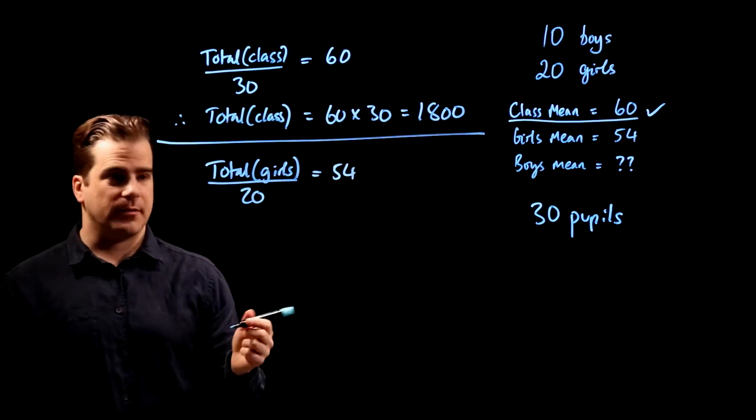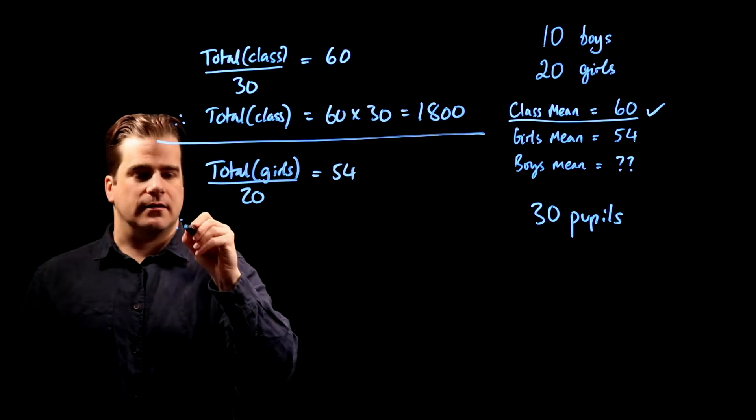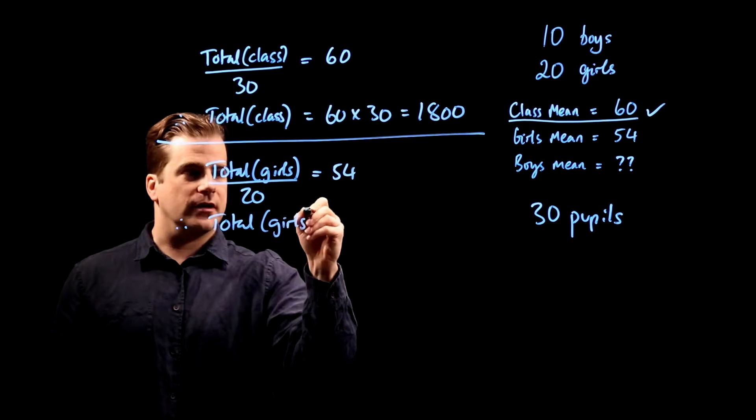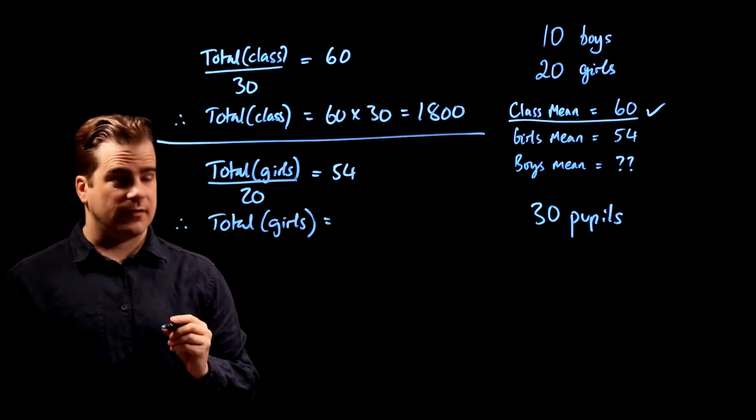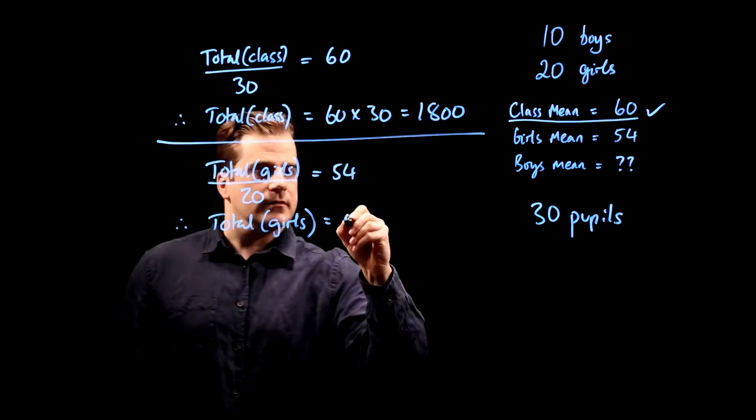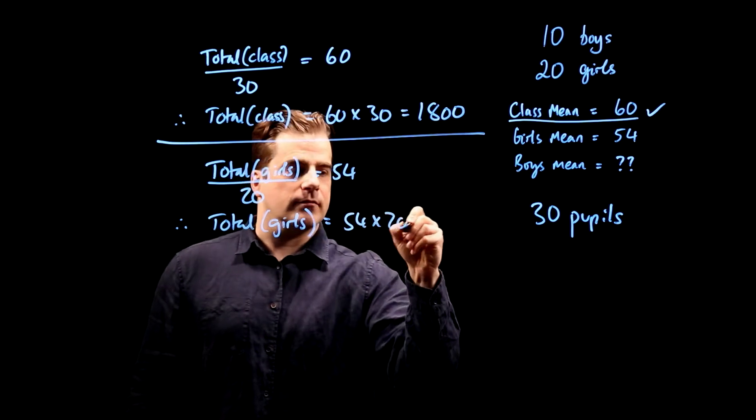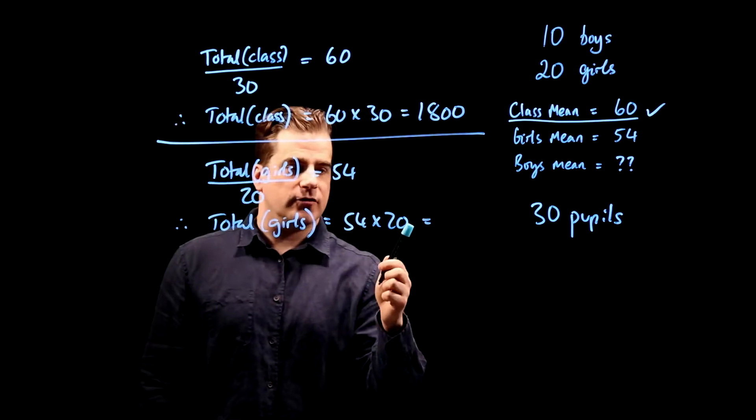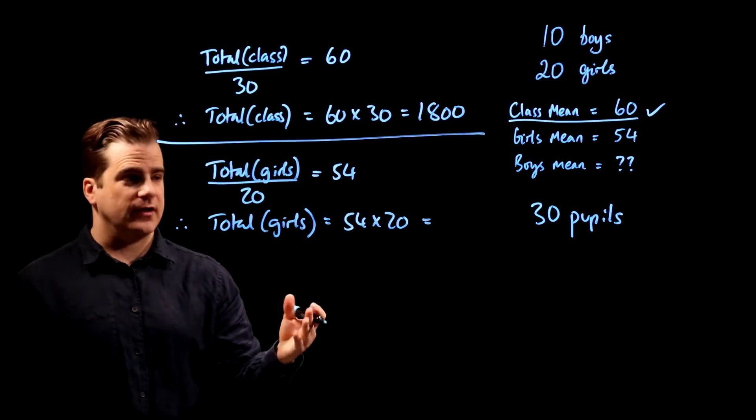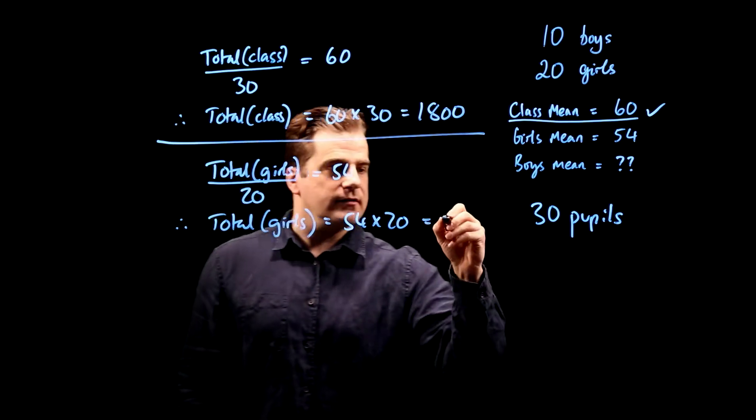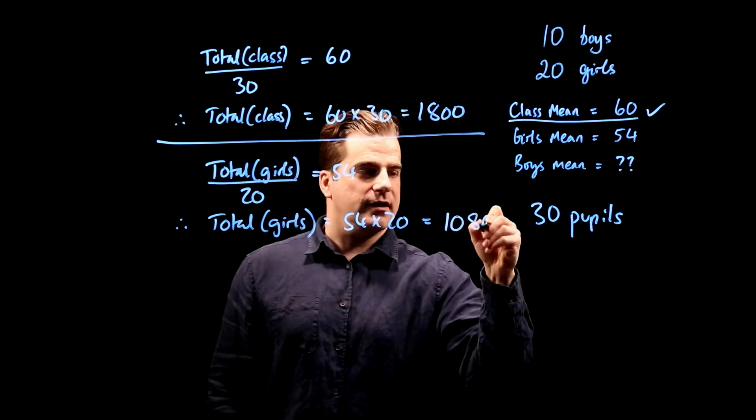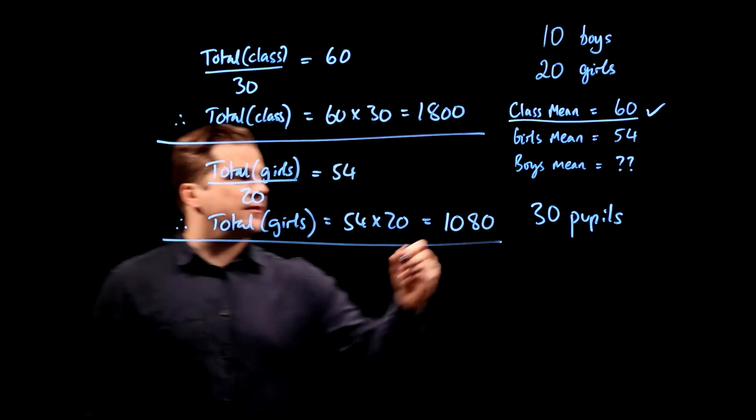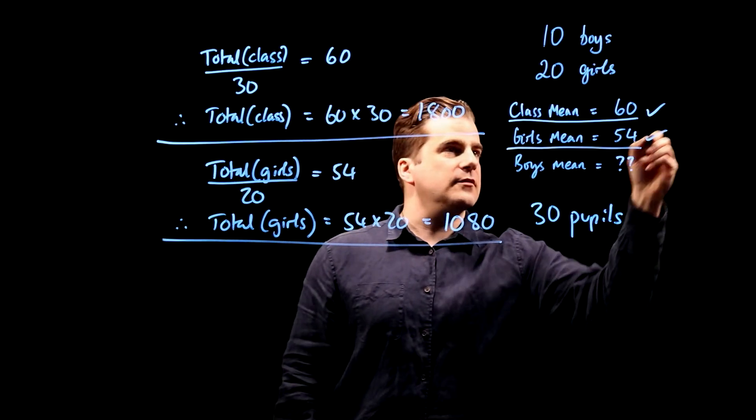So again, multiply both sides by 20. Therefore, the total for the girls is 54 times 20. Just do 54 times 10, which is 540, and then double it, which is 1,080. Good, so that's the girls' mean dealt with.